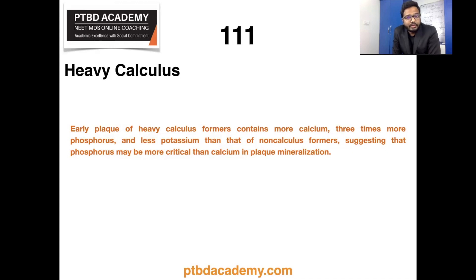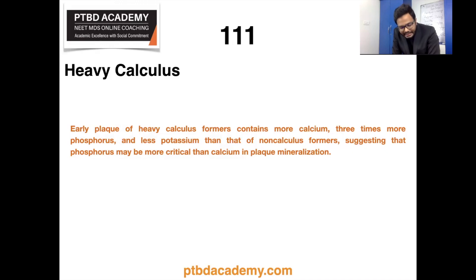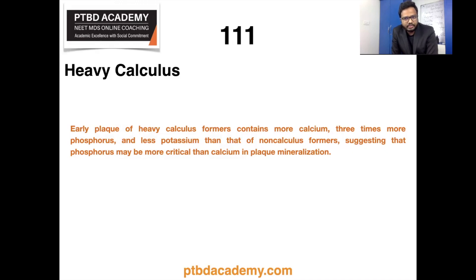Early plaque of heavy calculus formers contains more calcium, three times more phosphorus, and less potassium than that of non-calculus formers, suggesting that phosphorus may be more critical than calcium in plaque mineralization.